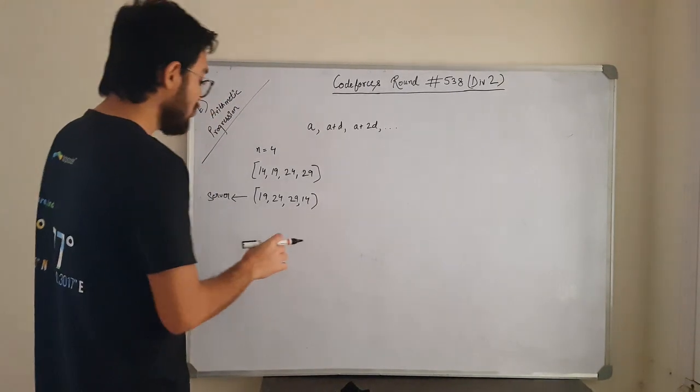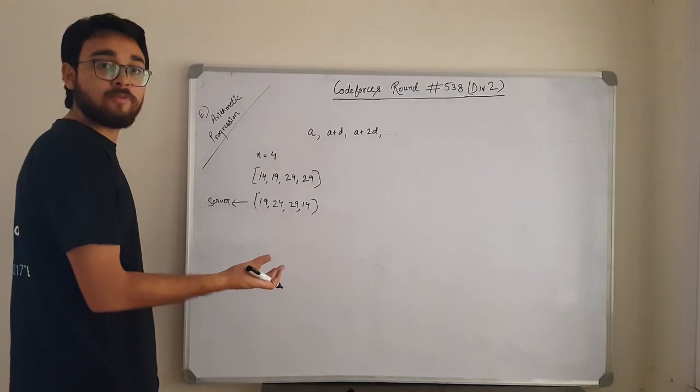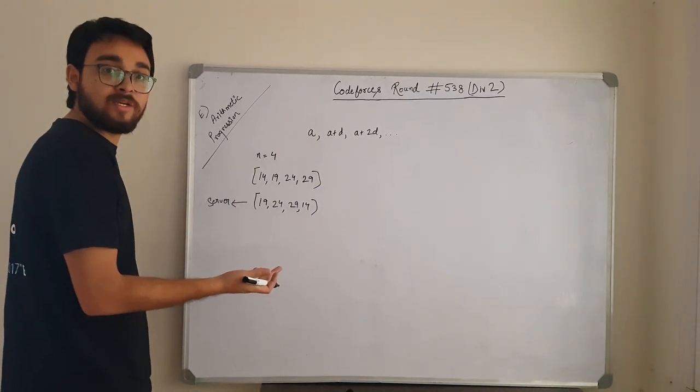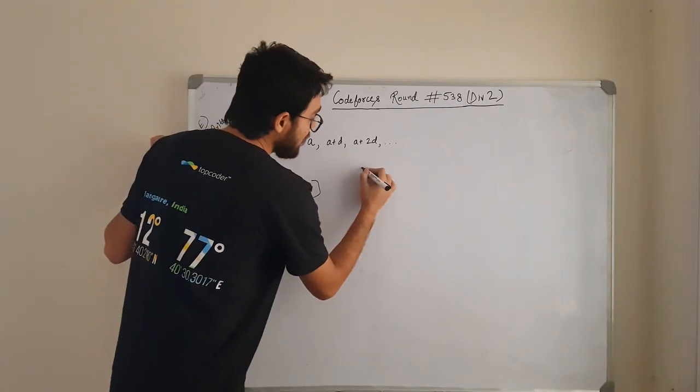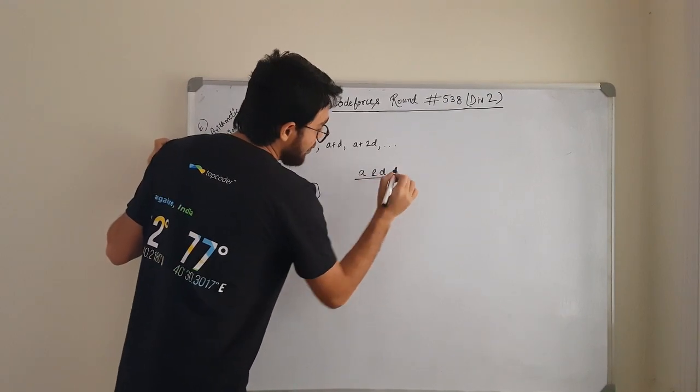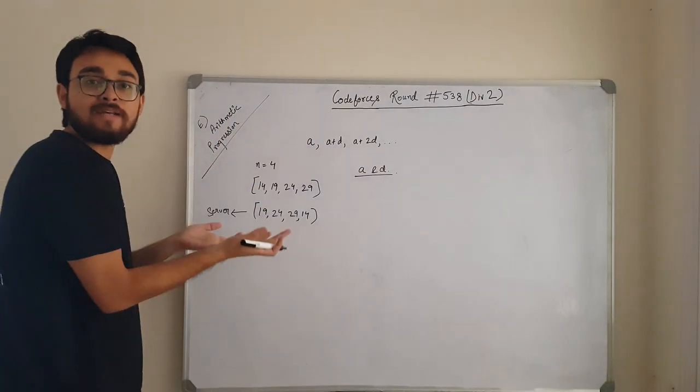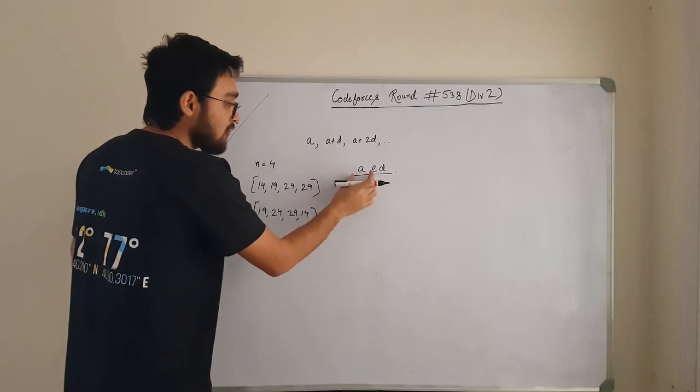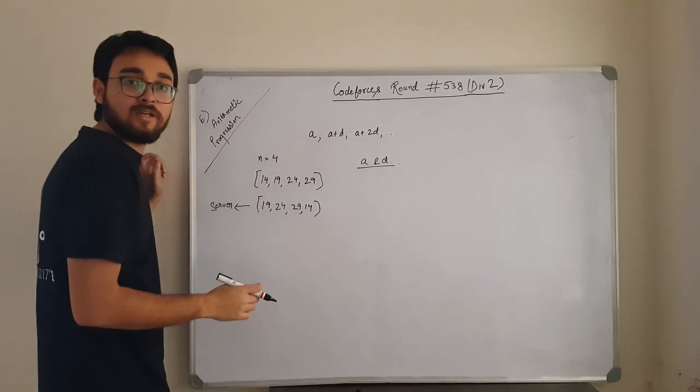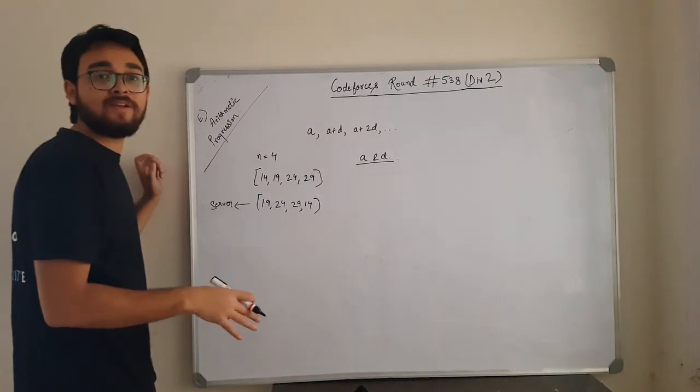Now your task is to predict this arithmetic progression. If you can find out a and d, then it is done. And this is what they are asking for as well. You need to return them the first element and the common difference.